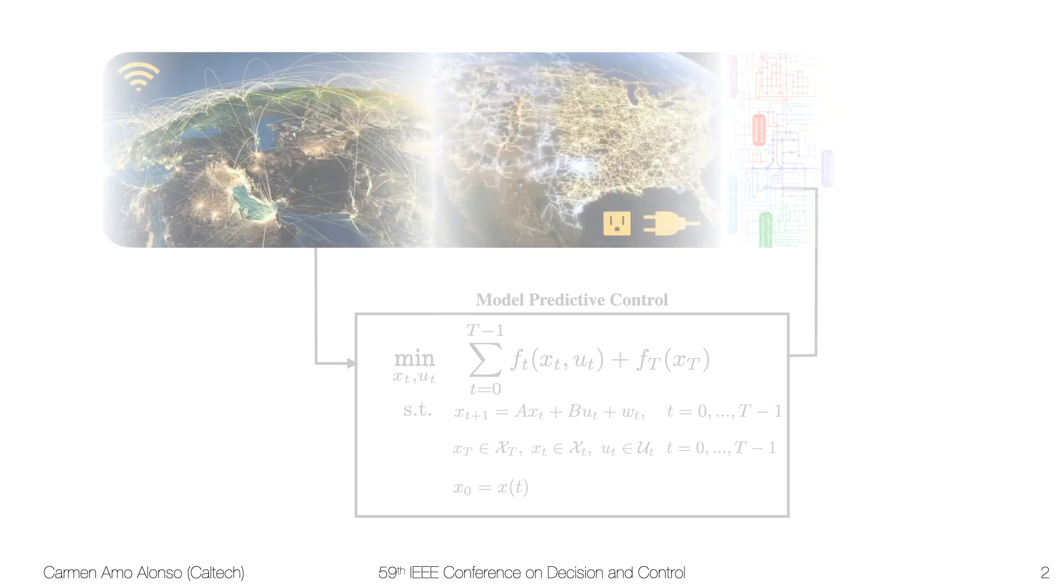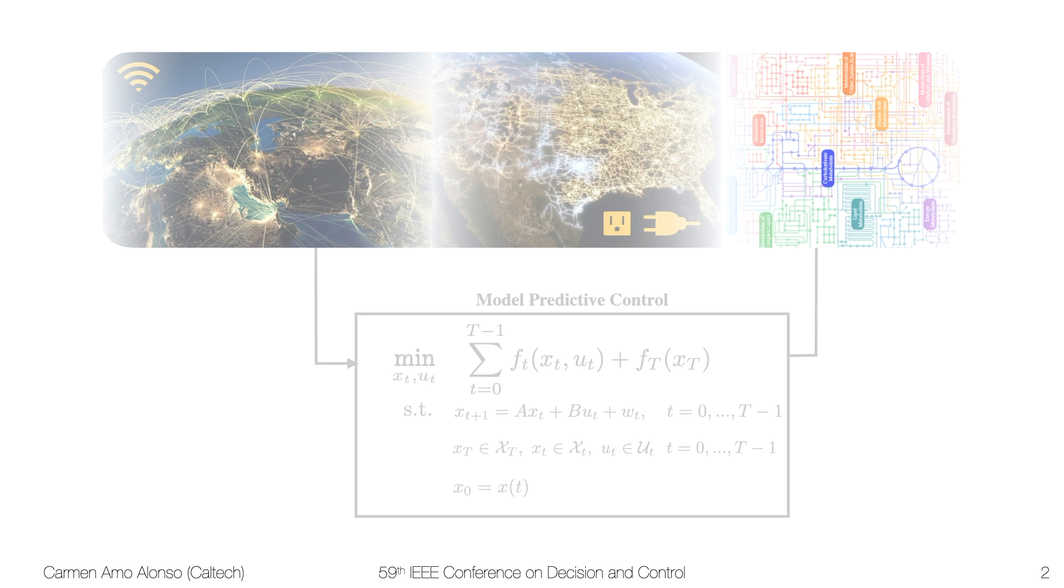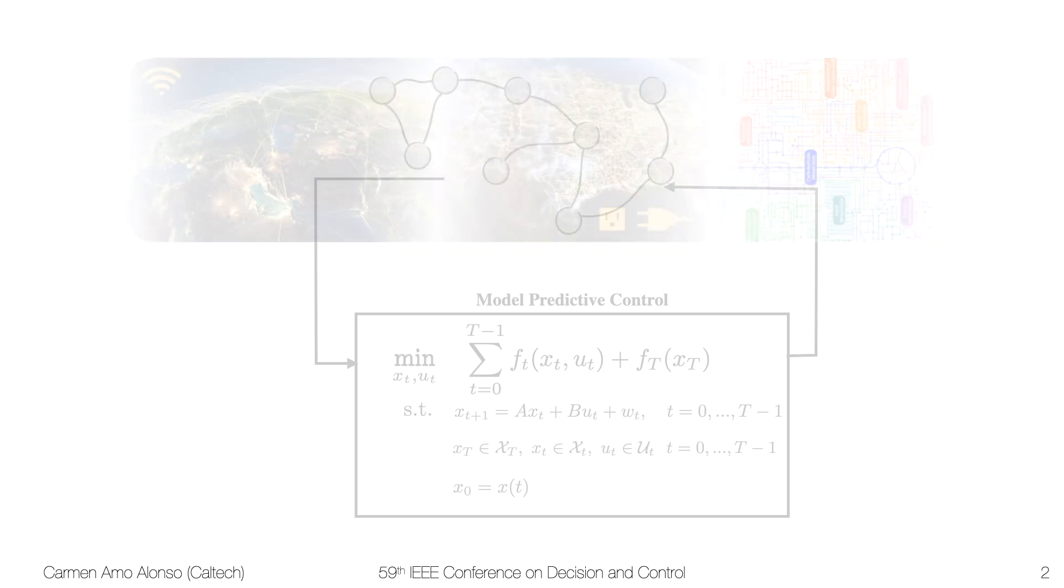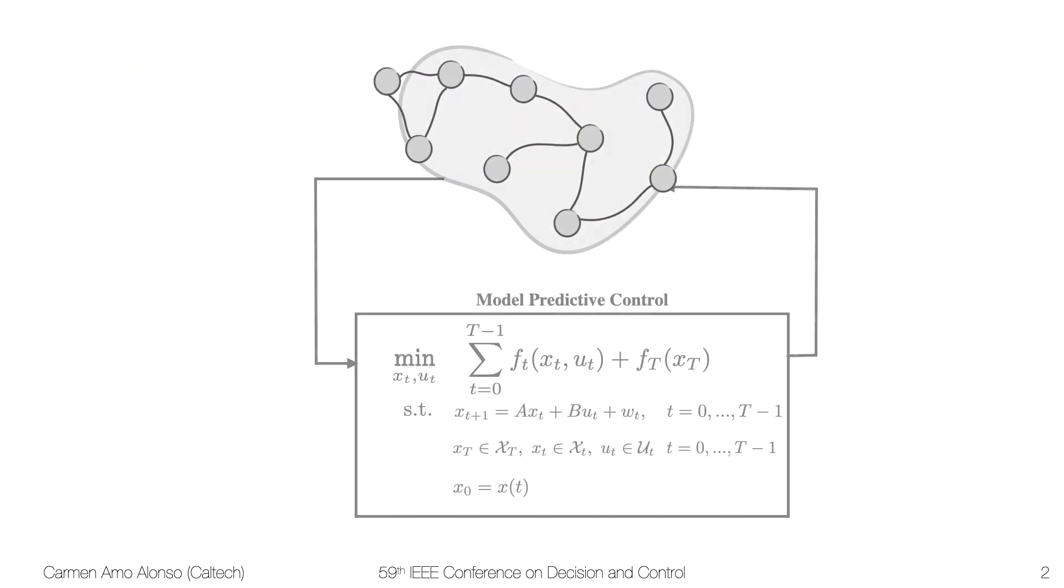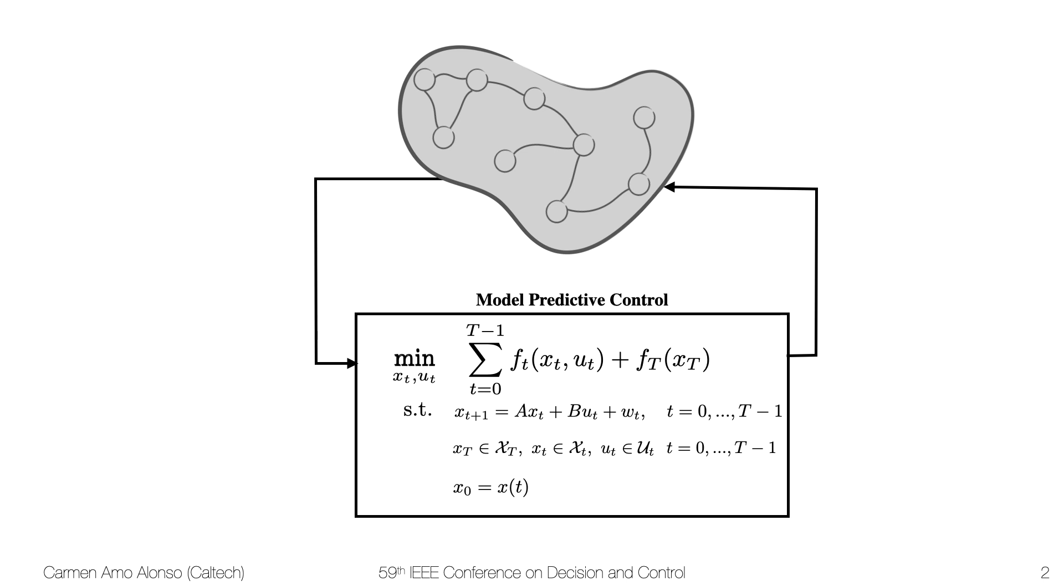These days we're dealing with different kinds of applications. We are surrounded by large-scale networks such as the internet, the power network, or biological networks. We could embed this network into this setting, however, by doing this we would lose all the structure that the network has, and due to the large dimension it would be computationally very expensive and sometimes even unfeasible.